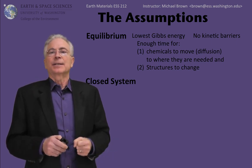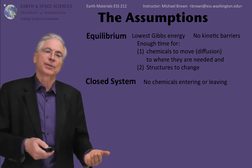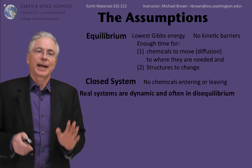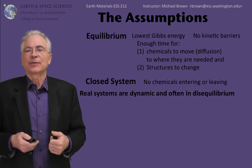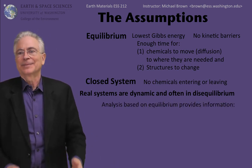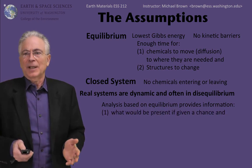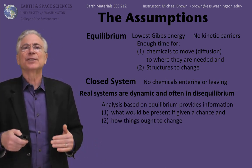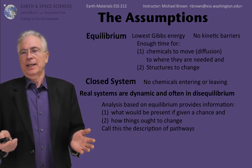The other assumption we have to make is that the geologic system we're looking at is a closed system — meaning no chemicals enter or leave the box in which we're studying the collection of minerals and other materials. Real systems are dynamic; there are materials coming in and out of the system, and real materials can often show disequilibrium. However, an analysis based on equilibrium is still useful. It tells you what would be present if given a chance, and it tells you how things ought to change from where they are now. All of this we could call a description of chemical pathways.